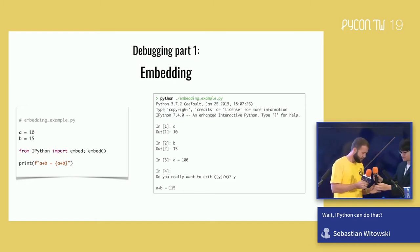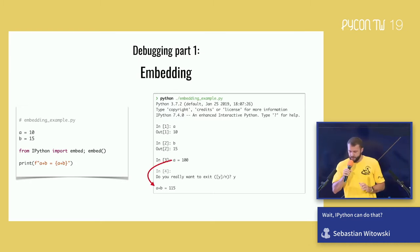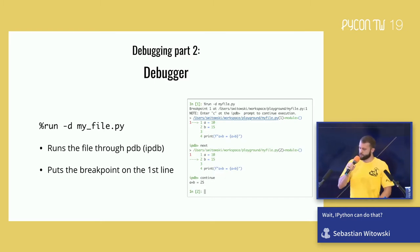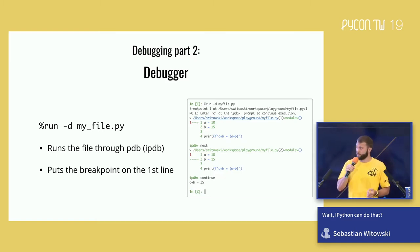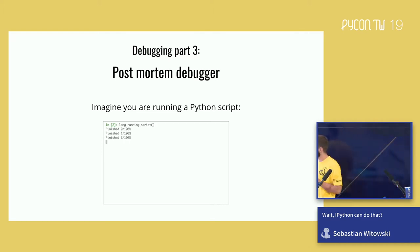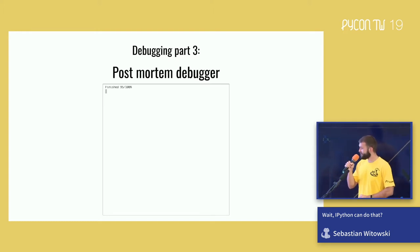When I'm done I just exit IPython and the code execution continues. A nice thing is that if I change some variables inside IPython, those changes persist when I close the embedded session. Embedding is nice but it's not really debugging. To actually run the debugger you can use the `run` magic method with the `-d` parameter and specify the file you want to run. IPython will run the file through the ipdb debugger and put a breakpoint on the first line.